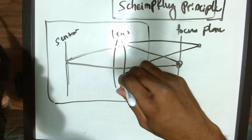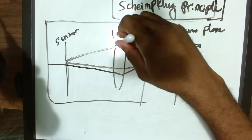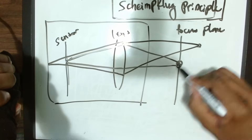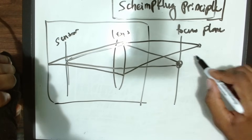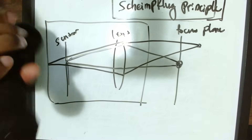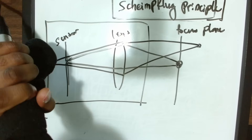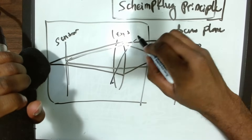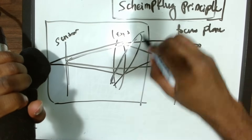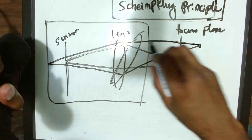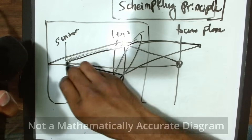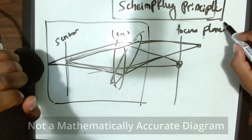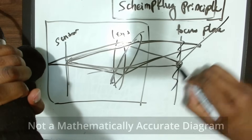If we wanted both points to be in focus, what a tilt-shift lens lets us do is tilt the lens of the camera so that both of these points become in focus and the focus plane line moves accordingly.